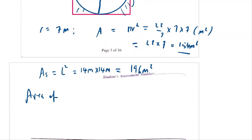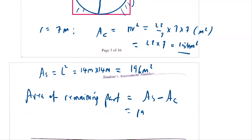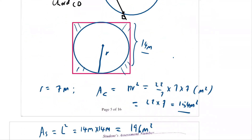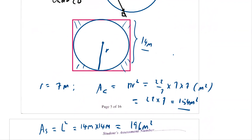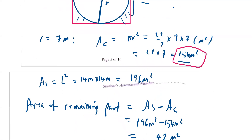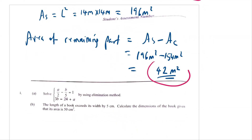The area of the remaining part is the area of the square minus the area of the circle: 196 metre squared minus 154 metre squared. You subtract to get 42 metre squared. So the area of the circular carpet is 154 metre squared, and the area of the remaining part of the carpet is 42 metre squared.